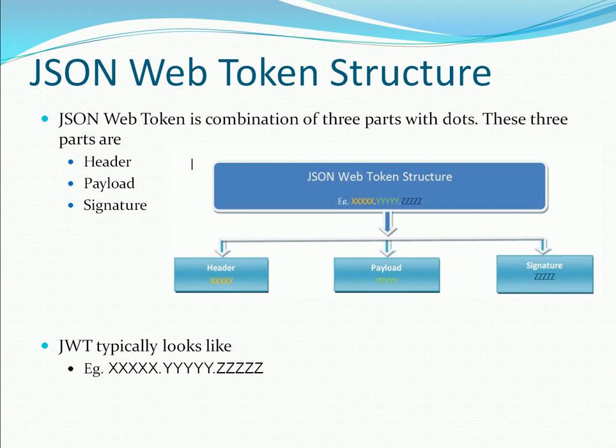Next is the JSON Web Token structure. A JWT token has three parts: the first part is the header, the second part is the payload, and the third part is the signature.